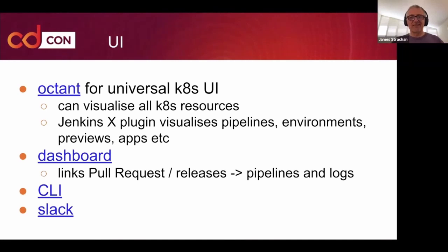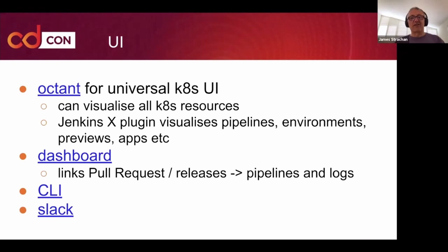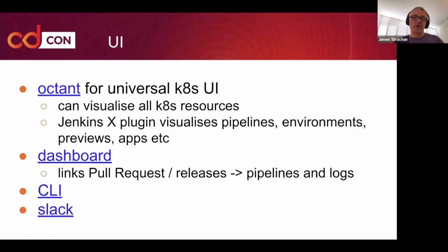When working as a team via a Git repository, we want to easily link Git pull requests and releases to pipelines and logs — that's where the dashboard comes in. The dashboard is a read-only web user interface to visualize pipelines, logs, and steps for pull requests and releases. It comes by default in Jenkins X and is automatically linked to all your pull requests and releases. Finally, there's the command line, which we've always had. In addition, we now have a Slack plugin that can notify you on failed releases or direct message you when your pull requests have triggered pipelines.